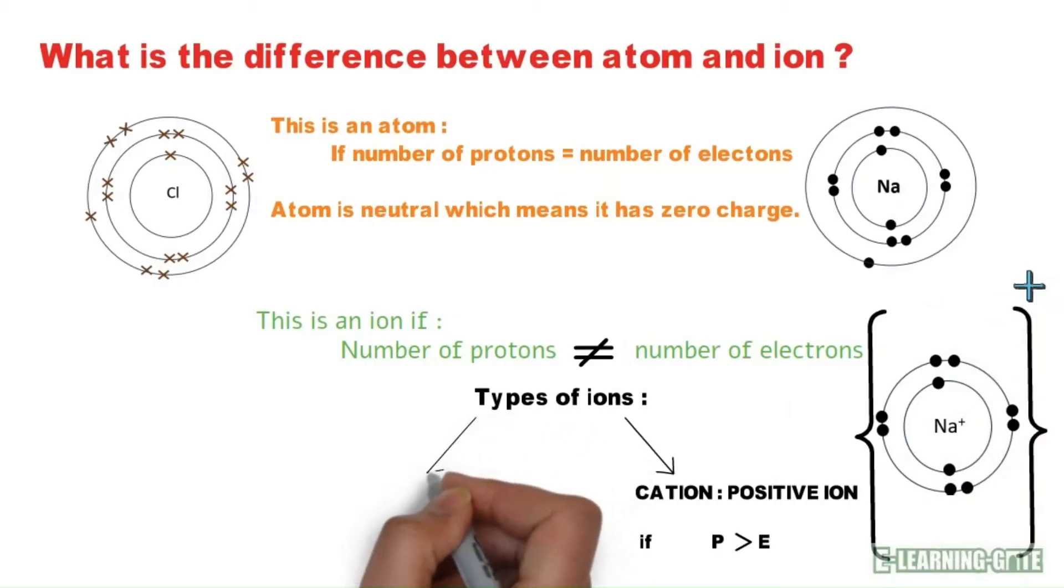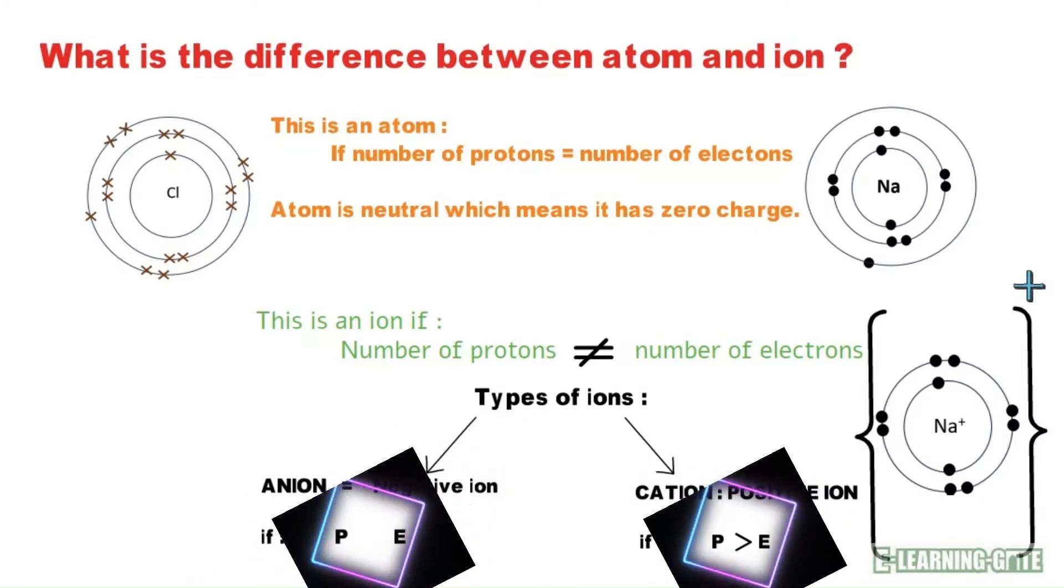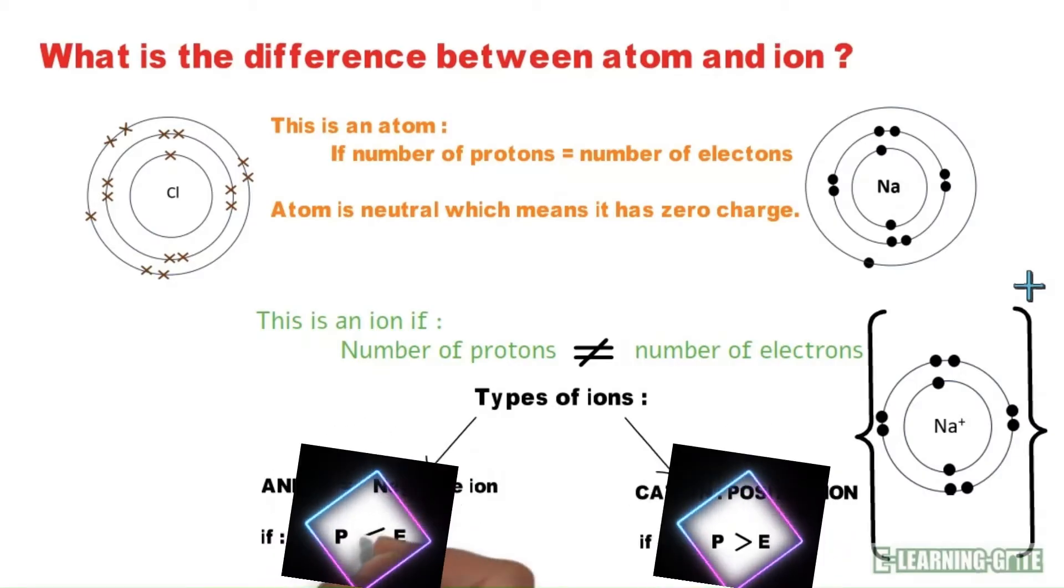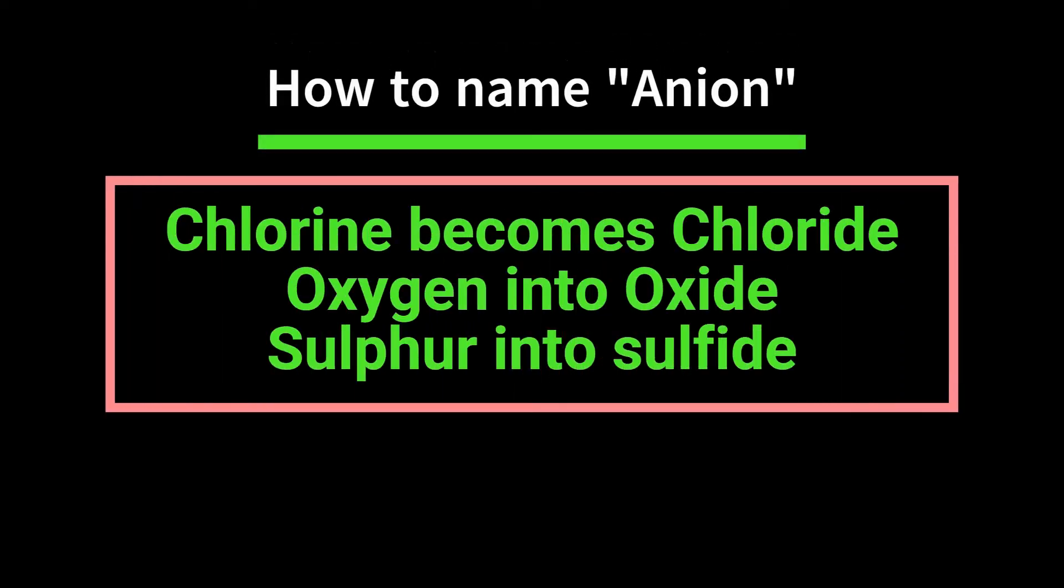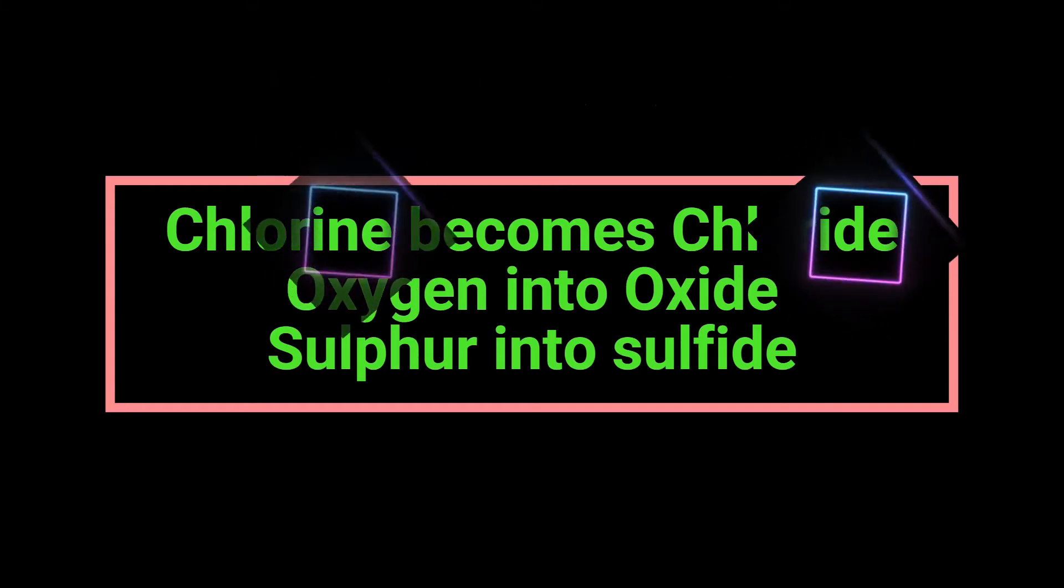The second type of ion is known as anion, which is negative ion. In anion, electrons are more than protons. While naming anions, their name ends at I-D-E.